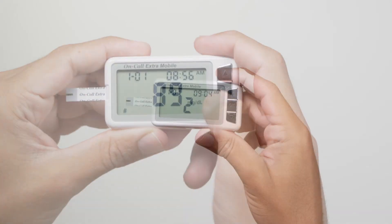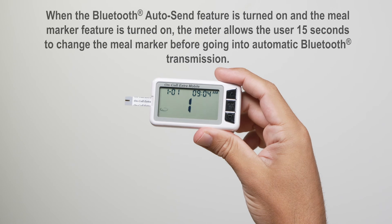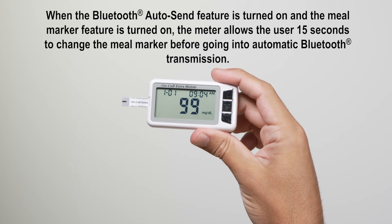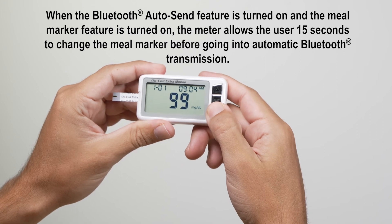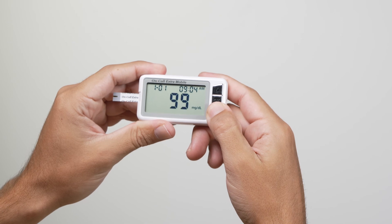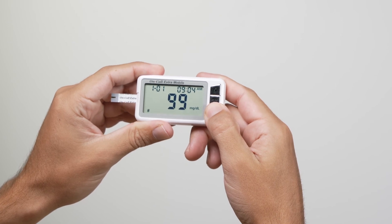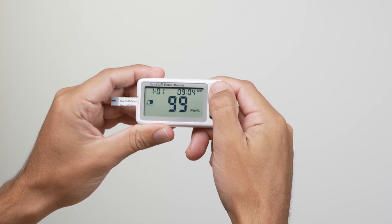When the meal marker feature is turned on, the test result will be displayed along with the suggested default meal marker based upon current time. The before meal or after meal symbol is flashing until confirmed by pressing the OK button. The meter allows the user to change the meal marker.